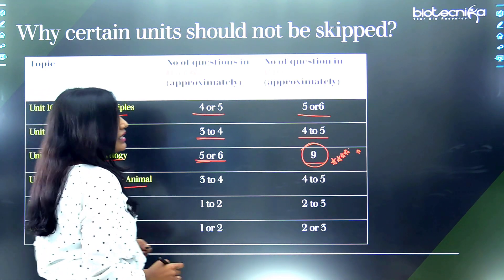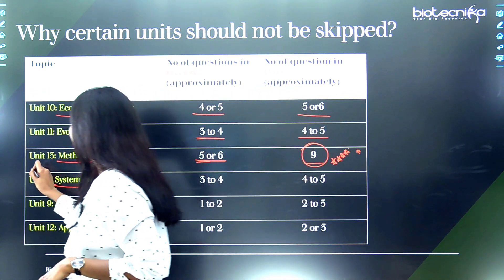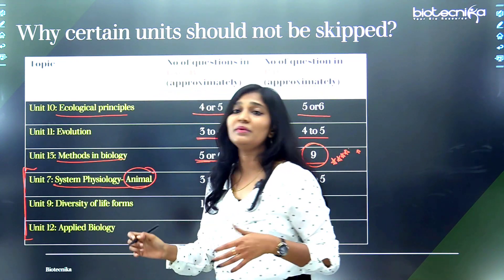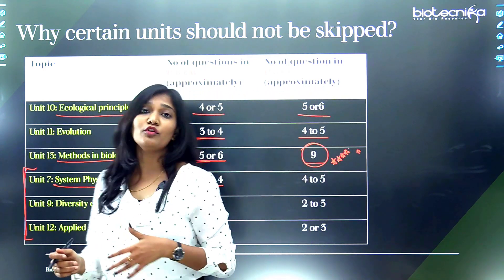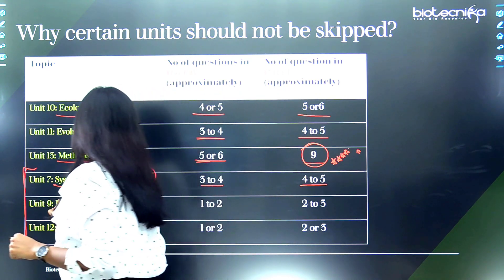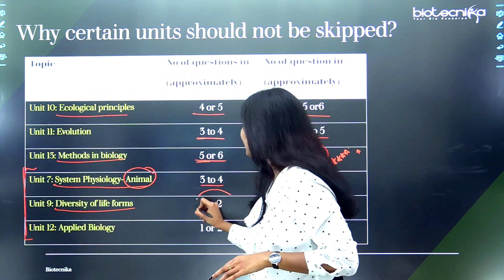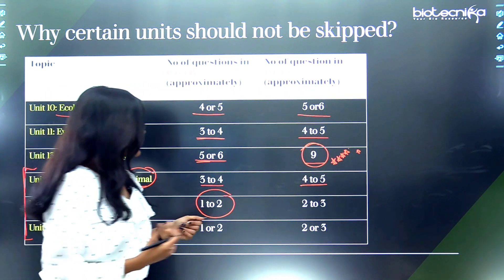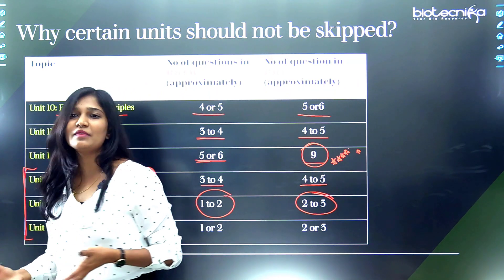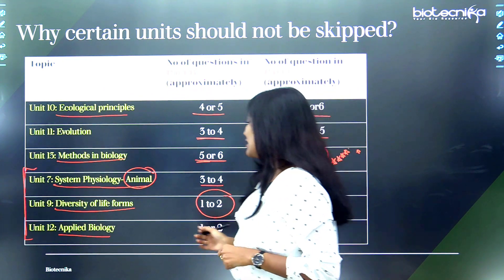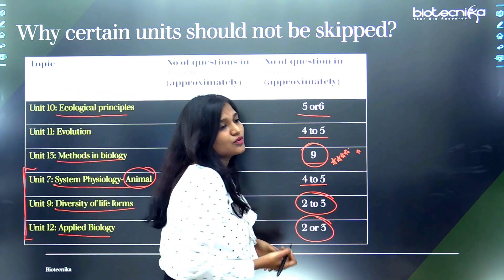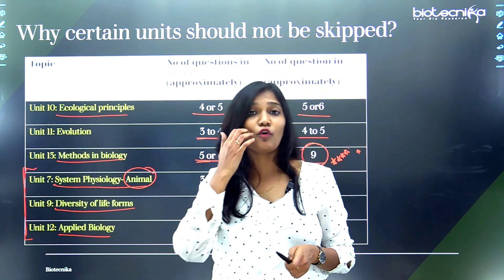The three chapters you can skip: animal physiology has three to four questions in Part B and four to five in Part C — it's okay to skip this if you're studying plant physiology. Diversity of life forms has only one to two questions in Part B and two to three in Part C. Applied biology also has one to two questions in Part B and two to three in Part C — it's okay to skip the last three units.